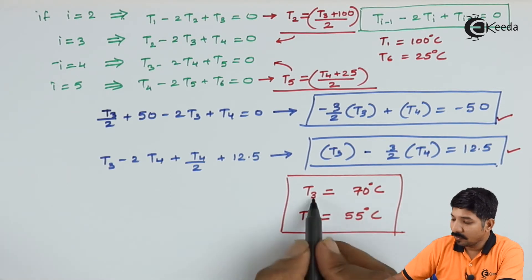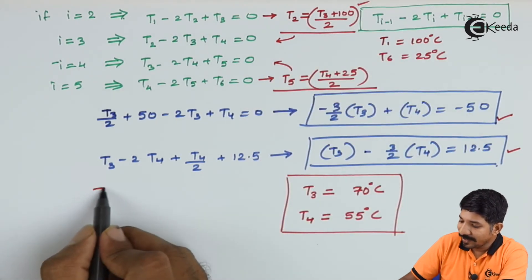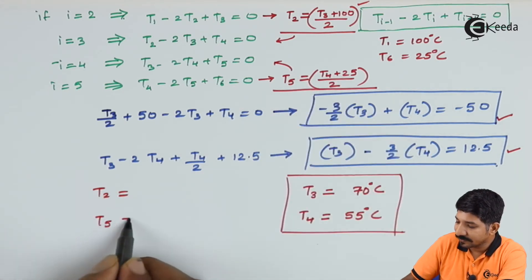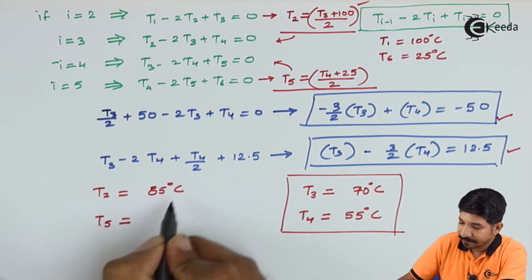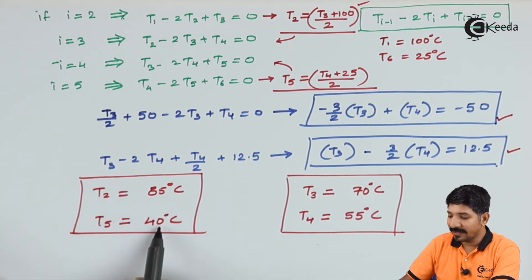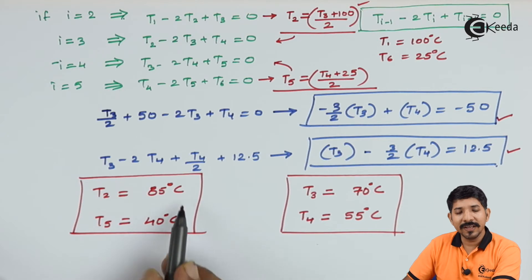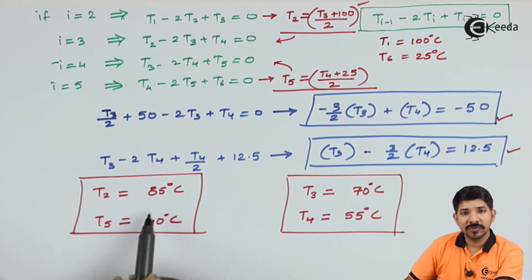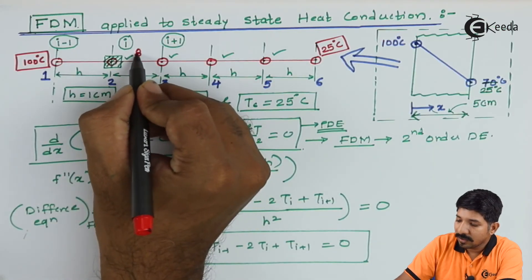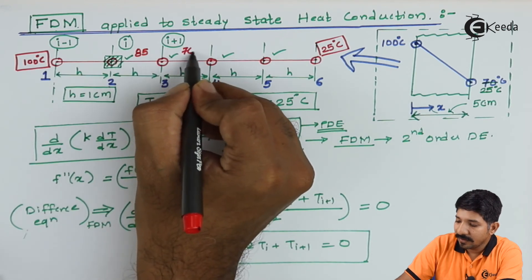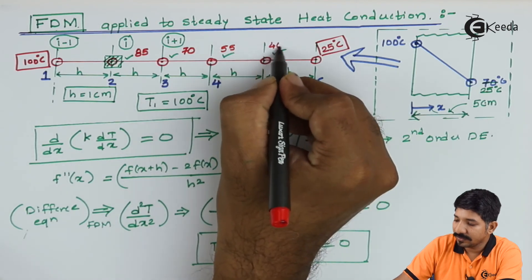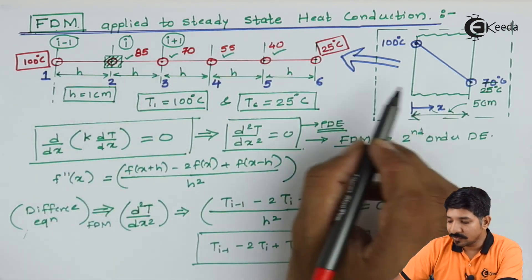Substituting the value of T3 back gives T2, and substituting T4 gives T5. The value of T2 is 85 degree Celsius and T5 is 40 degree Celsius. So the complete temperature distribution using the finite difference method is: T1=100, T2=85, T3=70, T4=55, T5=40, T6=25.